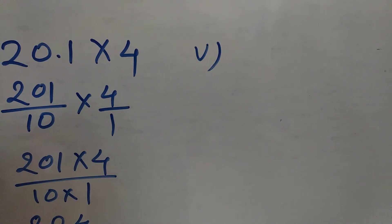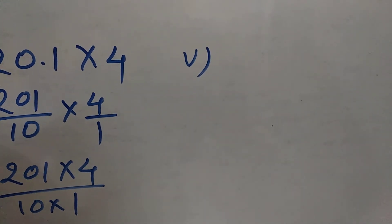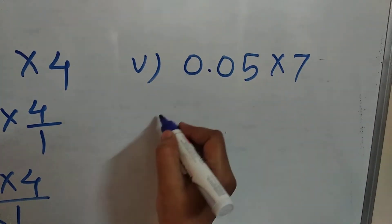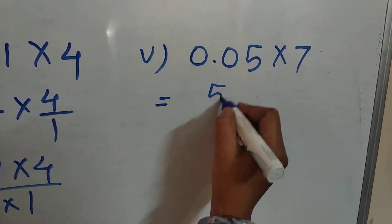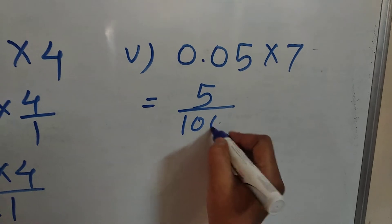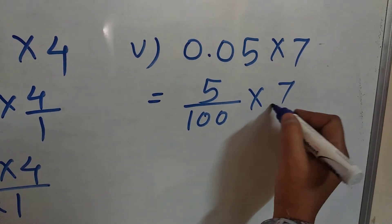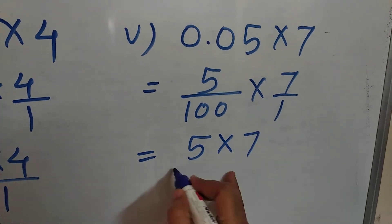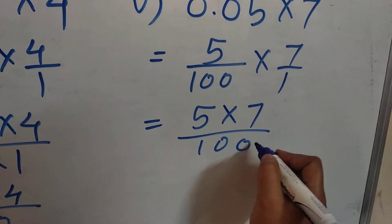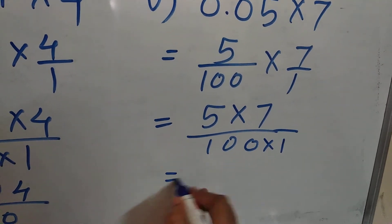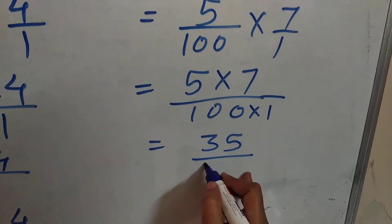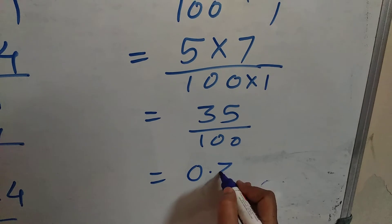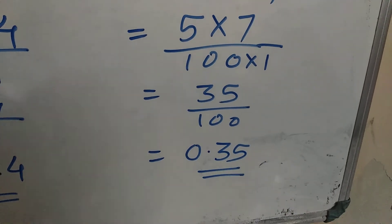Now the fifth sum: 0.05 multiplied by 7. Convert this into a fraction — it is 5 upon 100 multiplied by 7. Carry out the multiplication: 5 multiplied by 7 upon 100 multiplied by 1, giving 35 upon 100. The answer is 0.35.